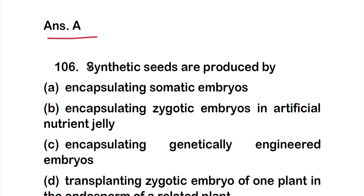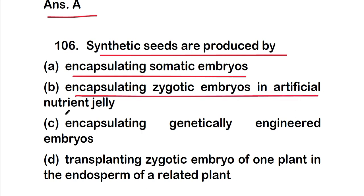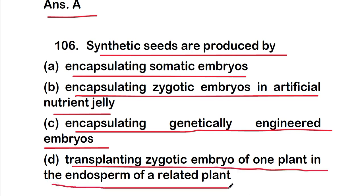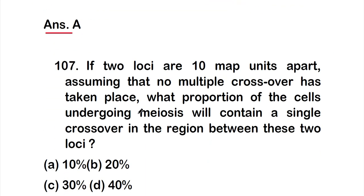Question 106: synthetic seeds are produced by Option A encapsulating somatic embryos, Option B encapsulating zygotic embryos in artificial nutrient jelly, Option C encapsulating genetically engineered embryos, or Option D transplanting zygotic embryos of one plant into the endosperm of a related plant. The right answer is Option A — encapsulating somatic embryos.